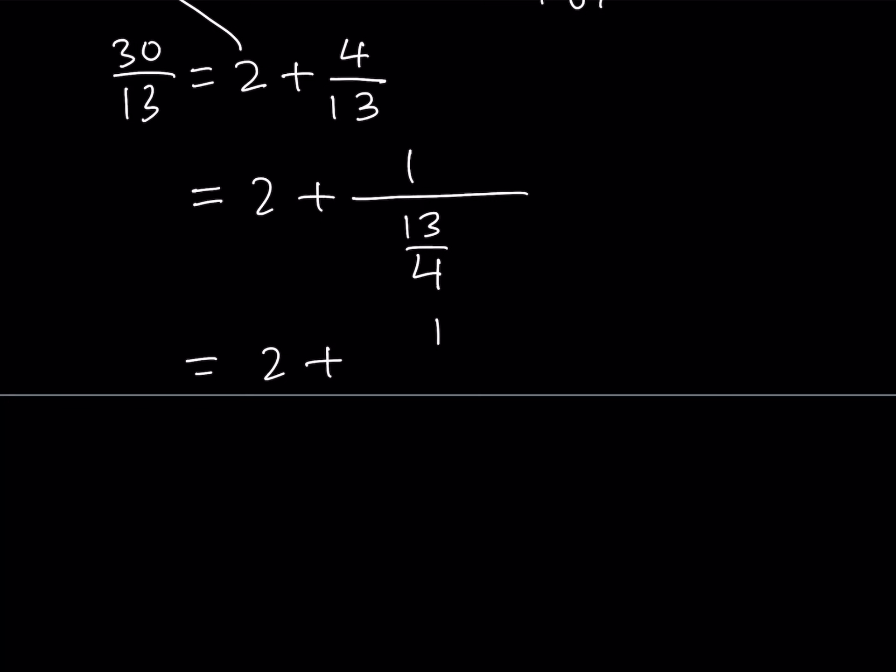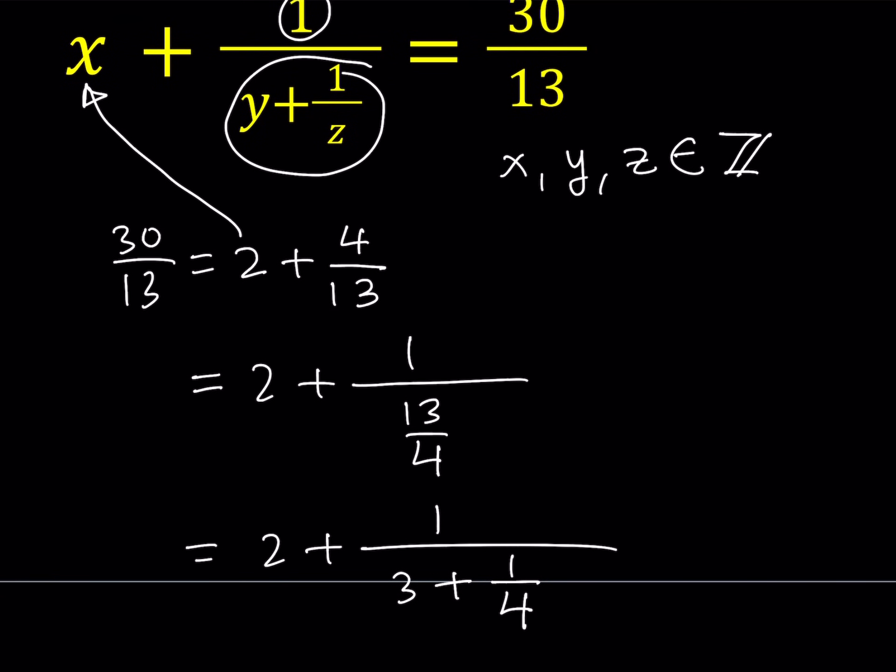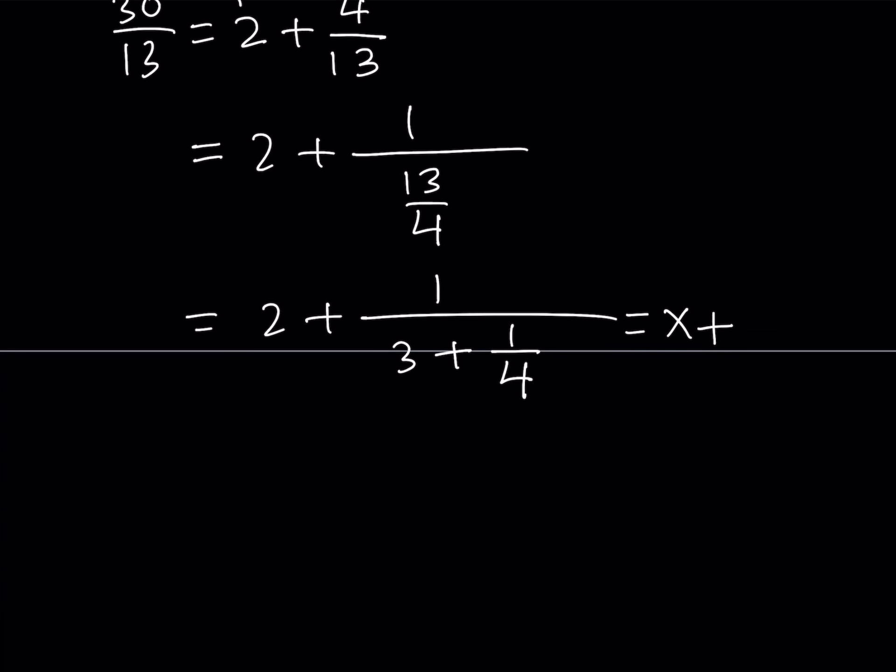2 plus 1 over, now if you divide 13 by 4, you should be getting 3, right? 3. And the remainder is 1 because 3 times 4 equals 12. So we can write it as 3 plus 1 fourth. Now at this point, I would like to go ahead and set this equal to my original expression and just go from there. So in this case, I would be getting something like x plus 1 over y plus 1 over z.